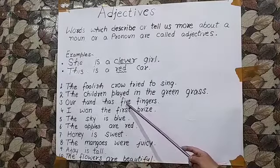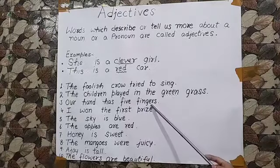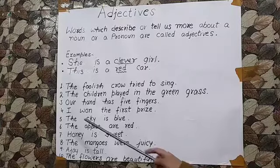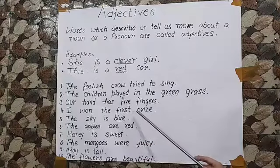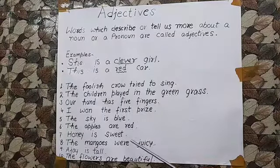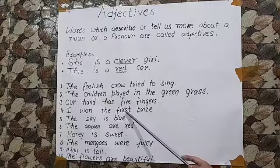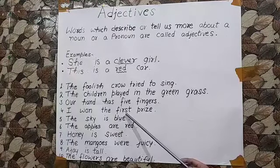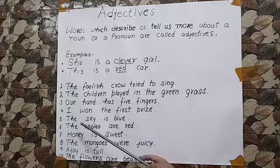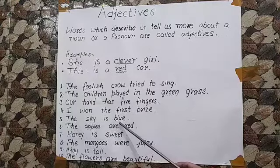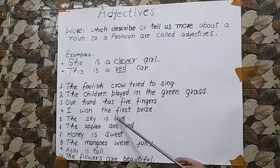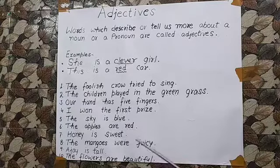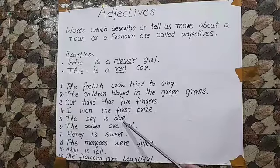So green is an adjective in this sentence. Our hand has five fingers. Now five tells the number of fingers, so five is an adjective in this sentence. Here the word first is describing about the noun prize, so first is an adjective in this sentence. The sky is blue.